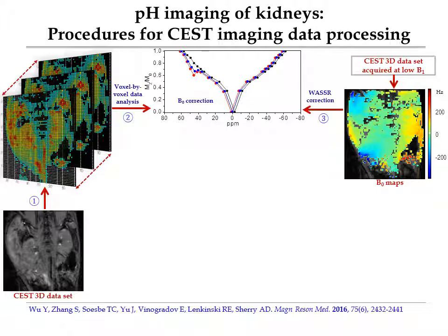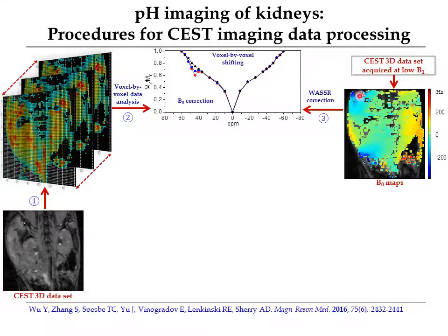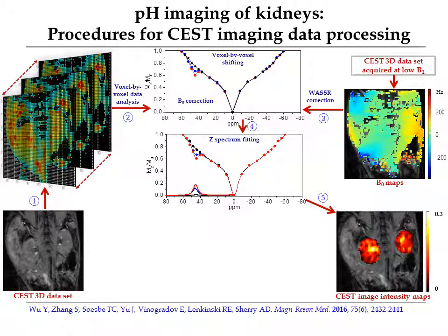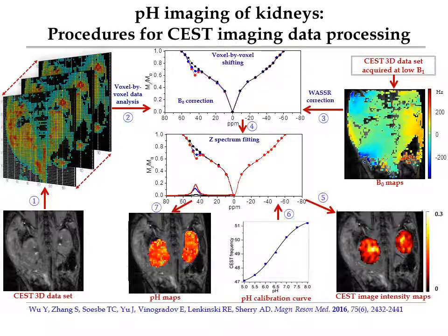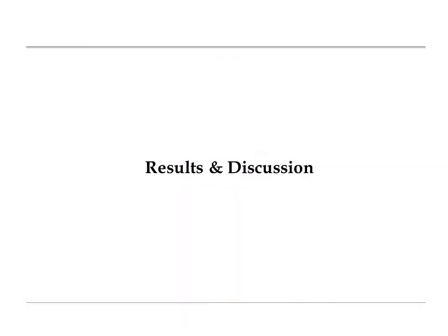Due to the effect of B0 magnetic field inhomogeneities, the bulk-water frequencies in the CEST Z-spectrum of some voxels are offset in positive or negative directions. To correct the B0 effect, it is needed to shift the individual spectrum to center according to the B0 map generated from a separate experiment. The B0-corrected Z-spectrum from each voxel was then fitted to double Lorentzian functions to get the CEST asymmetric Z-spectrum, from which the CEST signal intensity maps at a specific frequency can be calculated. Finally, based on the pH calibration curve, the final pH maps are generated.